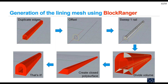Using Blockranger I want to create the lining volume, so I start from the outer surface of the tunnel and duplicate the edges. Once done, I offset the boundary of my tunnel and use the new polyline created to define the inner surface of the lining, thereby defining the lining volume. I then divide this volume into bricks that can be meshed by Blockranger — in this case four bricks: one, two, three, and four.